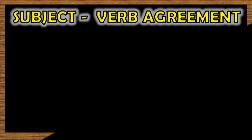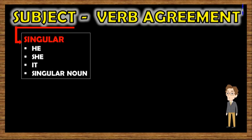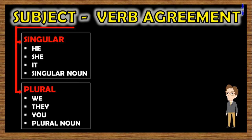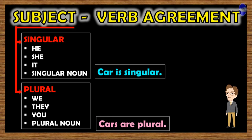In English, subjects are divided into two forms. They are singular and plural subjects. Singular subjects are such as he, she, it, or singular noun. Singular noun means the noun is not more than one, while plural subjects are such as we, they, you, and plural noun. Plural noun means if the nouns are more than one. For example, car is singular, because there is only one car. But cars are plural because there are more than one cars.